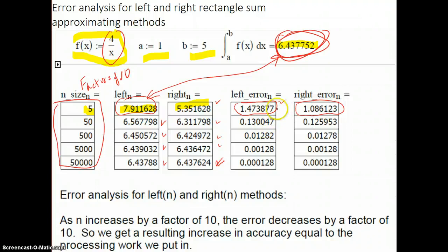The error from here to here looks like about 10 times less. And look at the decimal point as it's moving. It's 0.13 here. And now it's 0.013 if you round it off. And now it's 0.0013 if you round it off. Now it's 0.00013. So every time the error is decreasing by approximately a factor of 10, it's going down by a factor of 10 as we increase the n size by a factor of 10.